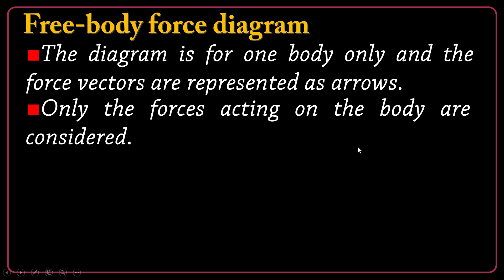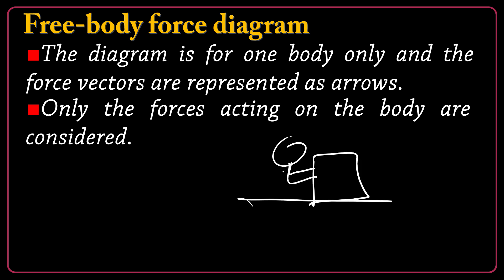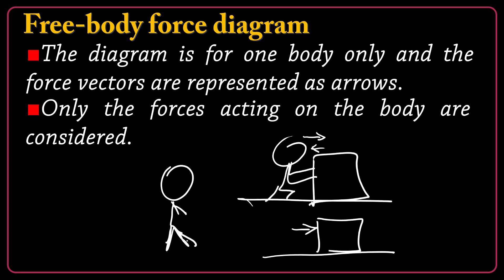The second rule is that only the forces acting on the body are considered. For example, you are pushing a box. When you push the box, the box will push you back according to Newton's third law — we have action and reaction. If you are considering just the box, you consider only the action — the force you act on the object, not the reaction. If you consider yourself, you indicate the force acting on you, say negative F. So F is the action and negative F is the reaction. Regarding the object of interest, you draw just the forces acting on that.